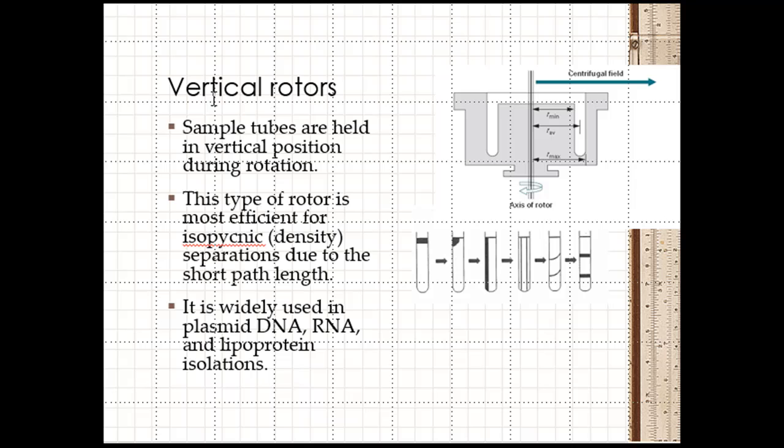Small rotors and sample tubes are held in a vertical position during rotation. This type of rotor is more efficient for isopycnic separation due to short path length. It is widely used in plasmid, DNA, RNA and lipoprotein isolation.